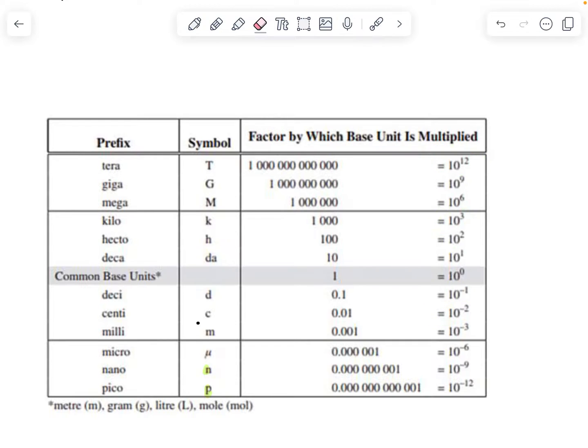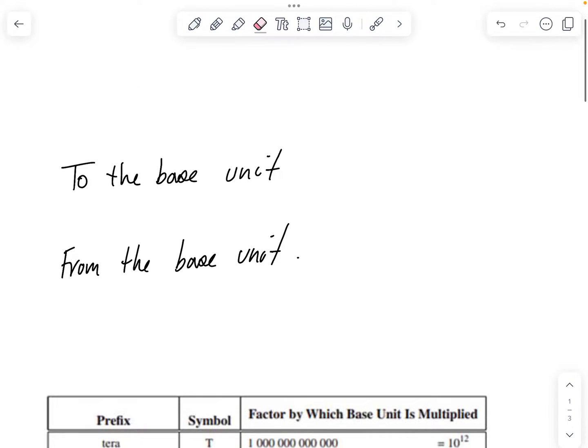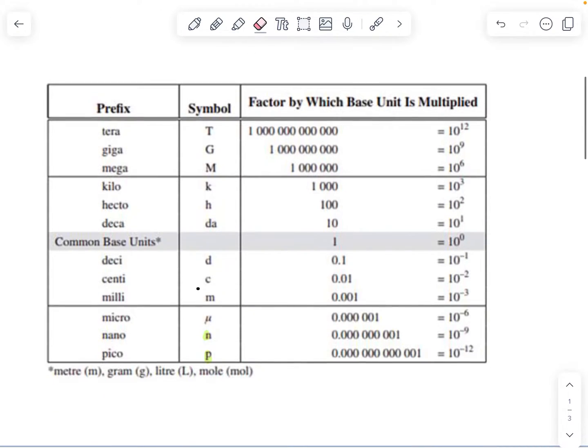So when we are talking about going to the base unit or from the base unit, the base units are going to be either meters, grams, liters, or mole. You'll notice that meters has got one letter, grams is one letter, liters is one letter. We will not likely see mole a lot in Science 10.